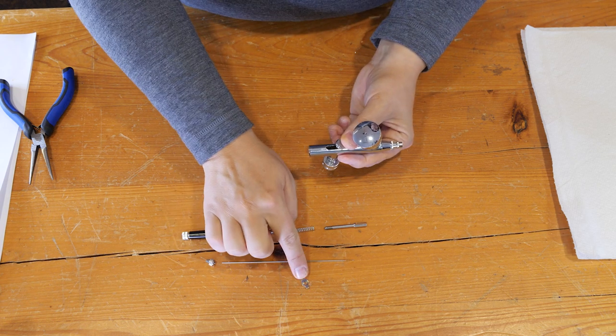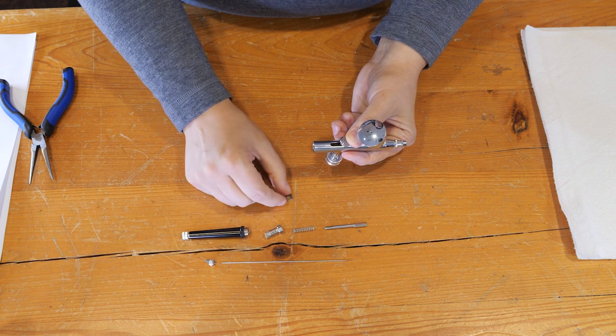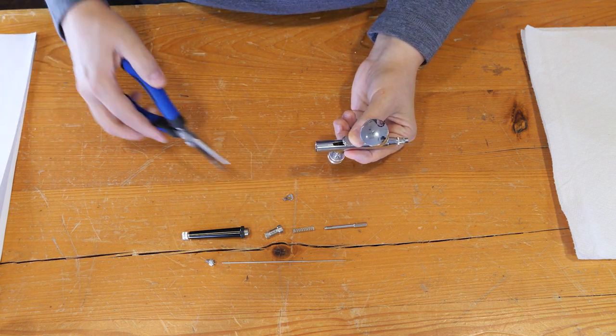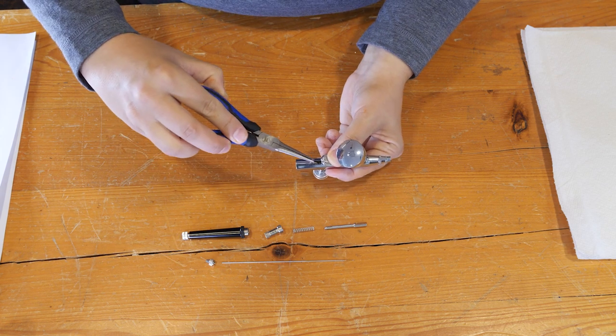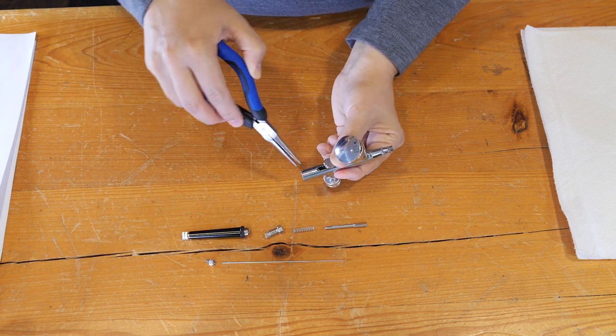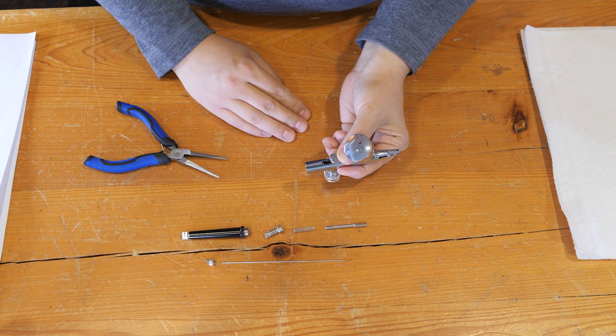Now you're going to want to insert this piece here. I like to use needle nose pliers to fit it into place as it is very small. You'll need to insert it vertically and then rotate. Make sure these pieces stay as still as possible as they will fall out easily.